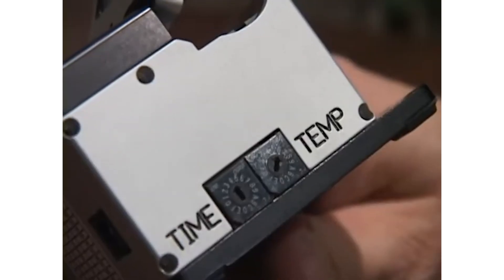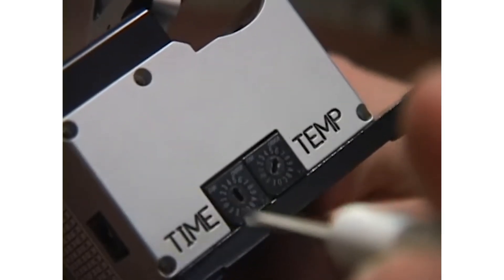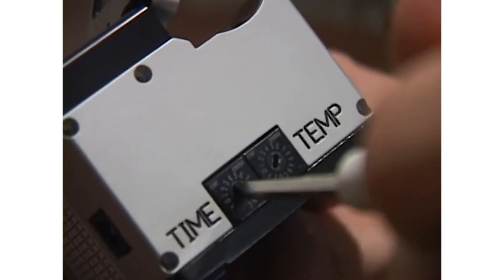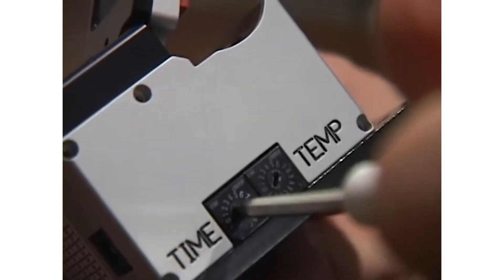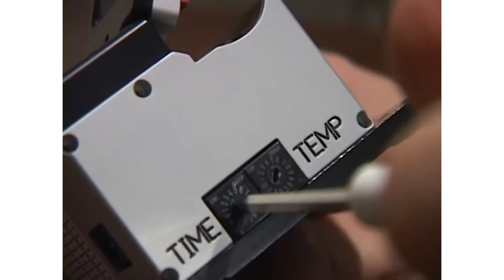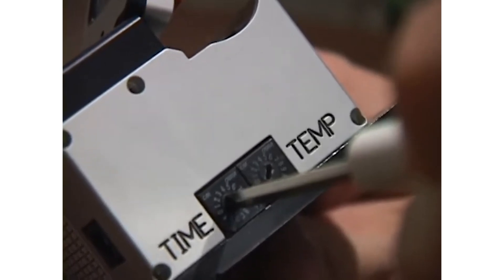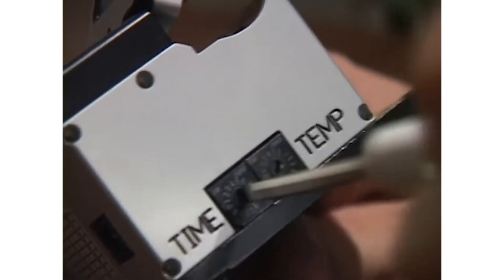To adjust the wait time, use a small flat screwdriver to rotate the time adjustment dial to the appropriate setting. The factory default is 6 seconds for stripping a 250 micron coated fiber. If the stripping process is not smooth or the fiber does not strip cleanly, you may need to increase the stripping time.